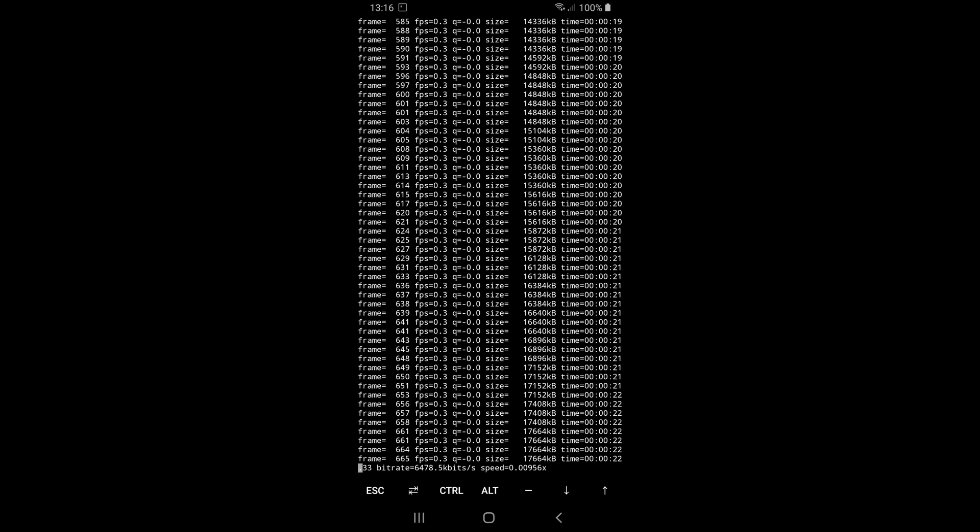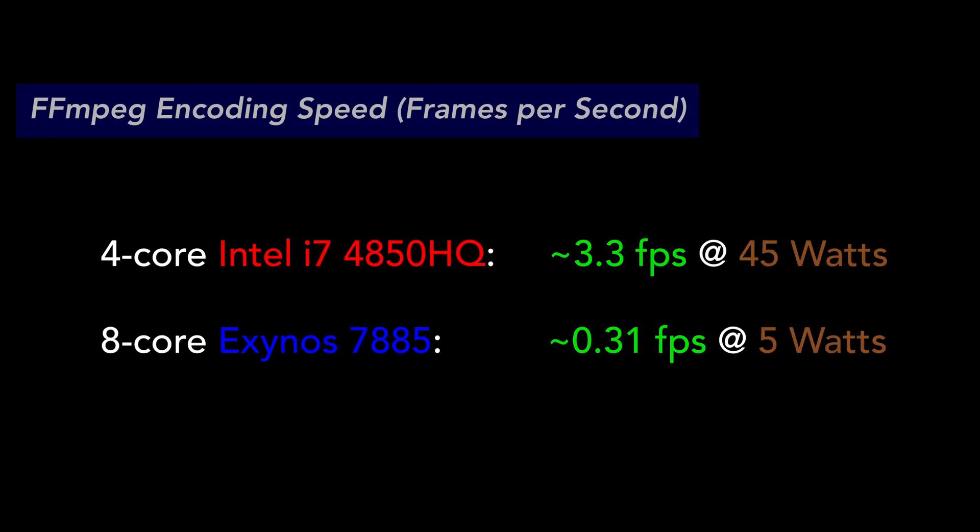The speed difference between my quad-core Intel i7-4850HQ 15-inch MacBook Pro and my 8-core Exynos 7885 Samsung phone was an astounding 1000% — that is a 10-fold difference overall, or a 20-fold difference per core.